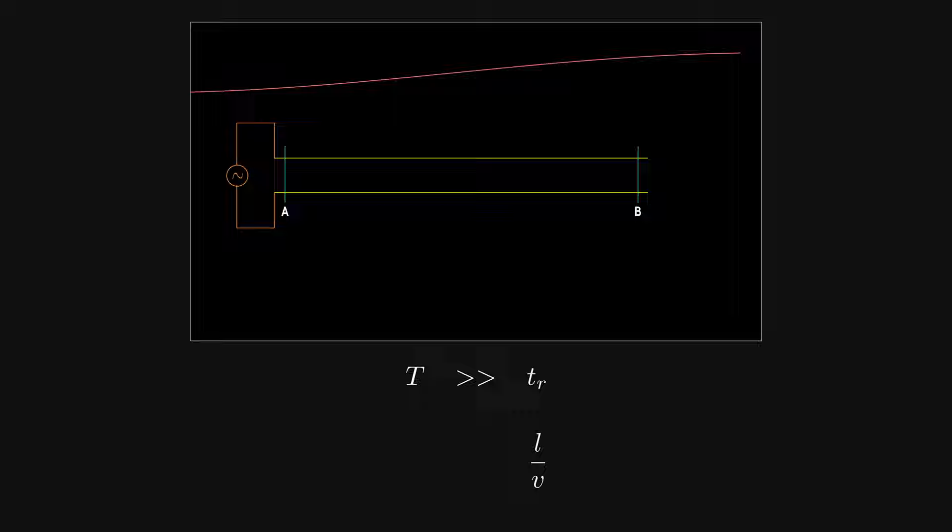Transit time is equal to the distance travelled by the wave over propagation speed, while the period is one over frequency. Hence, to minimize the voltage difference between points A and B in a wire, the length of the wire must be very small compared to the wavelength.